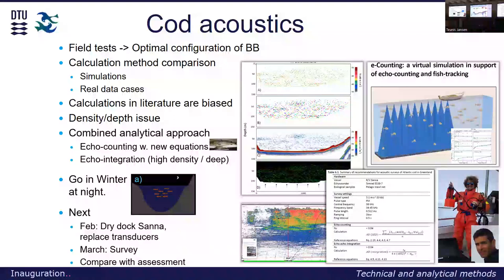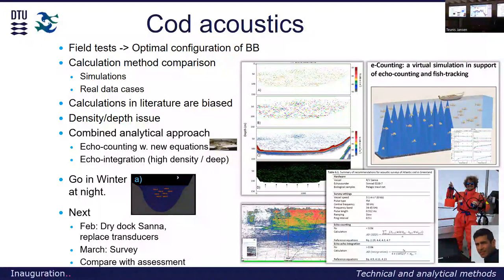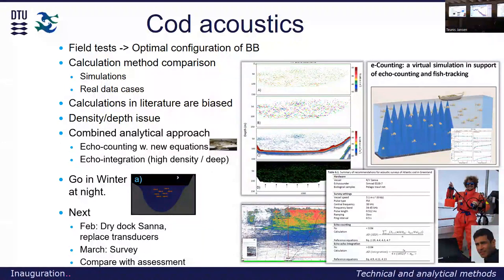Just as a fun fact: a school of cod we passed in February a bit north of Nuuk — we calculated that school contains the same amount of cod as they currently have in Kattegat. That tells us something about the state of Kattegat, but also the state of cod around Nuuk. While there are many reasons for the state in Kattegat, they do share one parameter: increasing temperature, which is in general a problem for the southernmost stocks and an advantage for the northernmost stocks of cod.